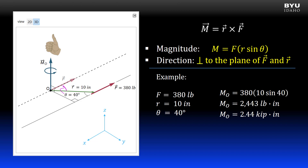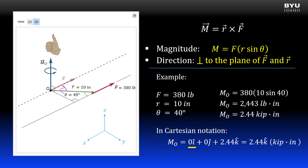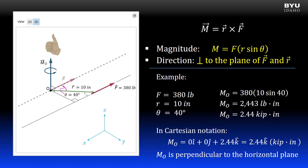I determine the direction by the right-hand rule, recognizing that the force and position vectors are in the xy plane, and curling my right hand fingers from the position vector to the force vector drawn tail to tail. I find that the direction of the moment vector is positive z. I can write the vector in Cartesian notation as 0i, 0j, and positive 2.44 kip inches k, or just 2.44 kip inches k. I know it is the k, or z, direction because the vector must be perpendicular to the horizontal plane.